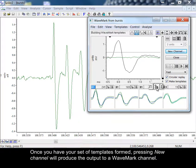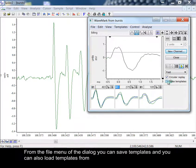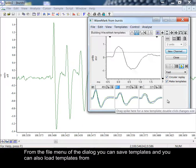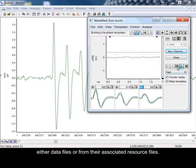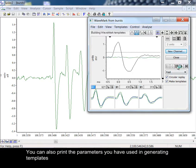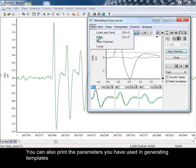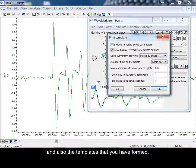Once you have your set of templates formed, pressing New Channel will produce the output to a wave mark channel. From the file menu of the dialog, you can save templates and you can also load templates from either data files or from their associated resource files. You can also print the parameters you have used in generating templates and also the templates that you have formed.